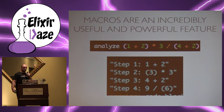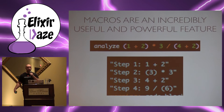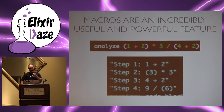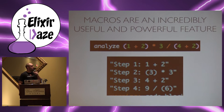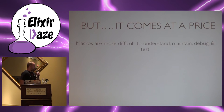Here's an example of when you might need a macro. Say I want to take a mathematical expression and log the steps that Elixir takes to solve that problem. I couldn't do this with a regular function because when I call analyze and pass this expression in, it's going to equate to 1.5 before it ever gets to analyze. We can't reconstruct that from 1.5 — that just doesn't work. But we can do that with macros, and it comes at a price.